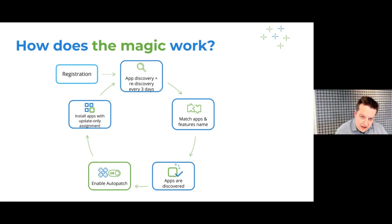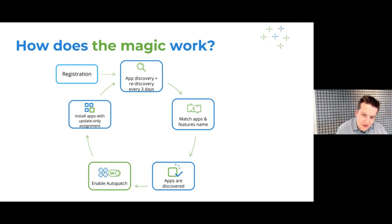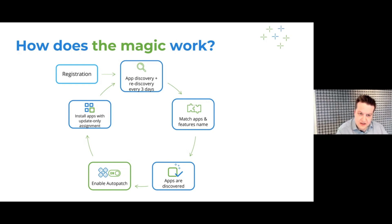We're re-evaluating that every three days. So every three days we're running through that cycle again, and we're going to make sure that if we discover a new application we are going to start matching it. Every three days we're going to discover the apps in your tenants and start matching them.